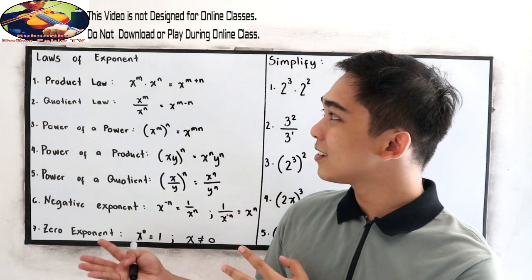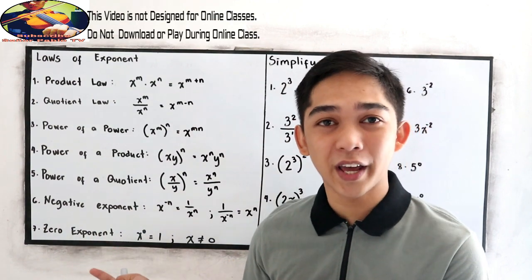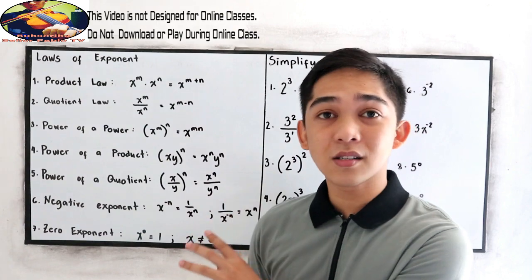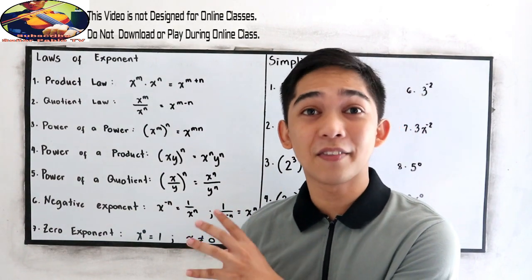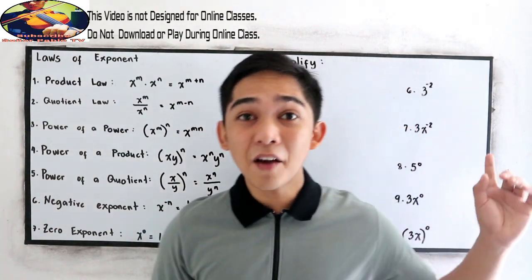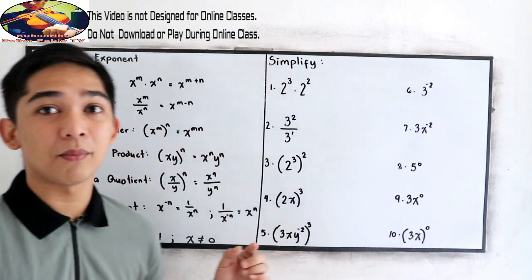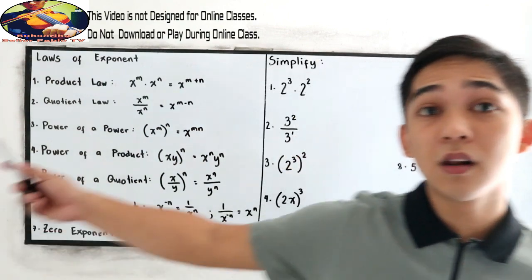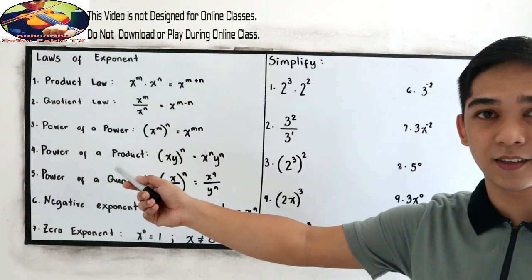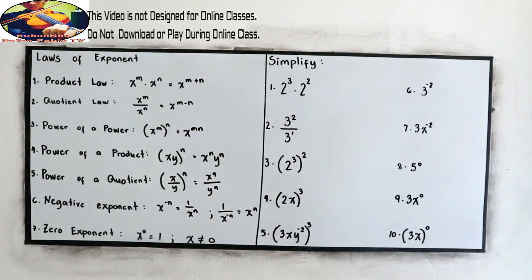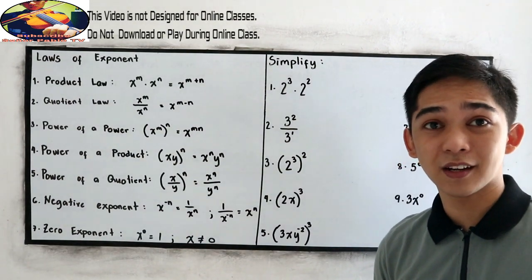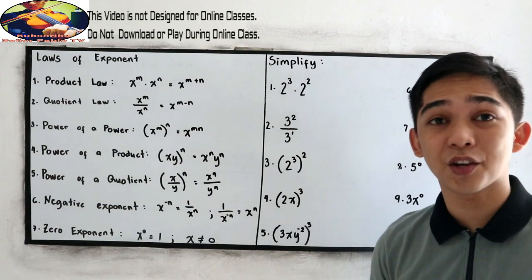Now let us apply the following laws to better understand. I have here problems 1 to 10. We're going to simplify using our laws of exponents. If you want to try numbers 1 to 10, you can pause the video, then after answering, resume watching to check your answers.